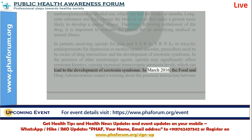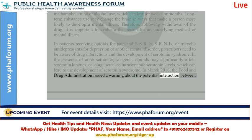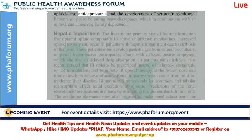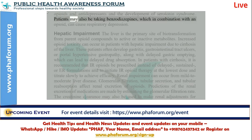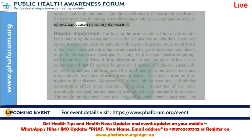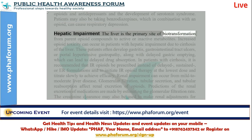In March 2016, the FDA issued a warning about the potential interaction between opioids and antidepressants and the development of serotonin syndrome. Patients may also be taking benzodiazepines, which in combination with an opioid can cause respiratory depression.